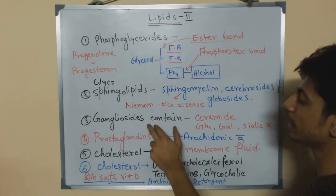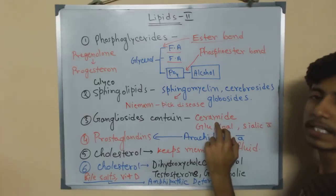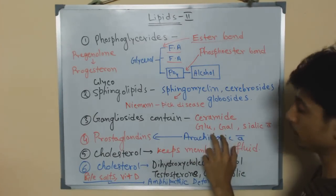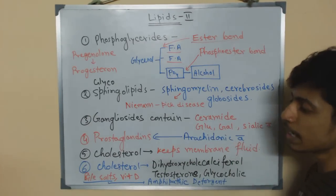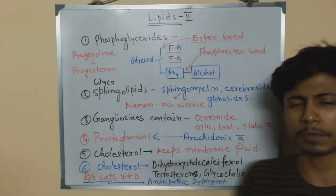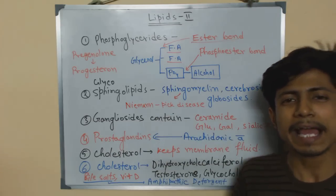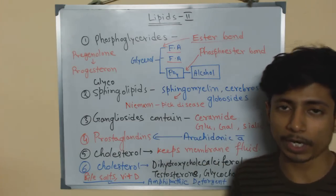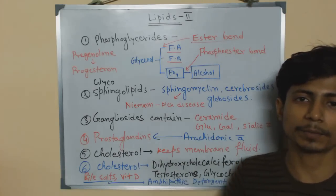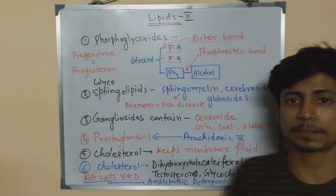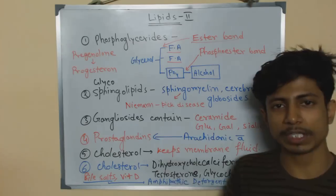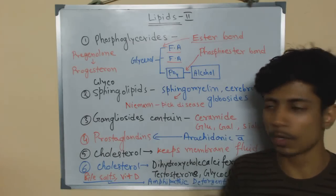Gangliosides contain ceramide, some sugar such as glucose or galactose, and sialic acid. Another important point is that the ABO blood group system depends on the type of glycoproteins present — the sugar moieties on the surface of our red blood cells — and that's why different blood groups occur.